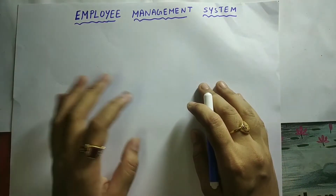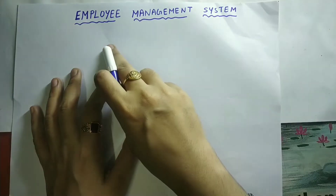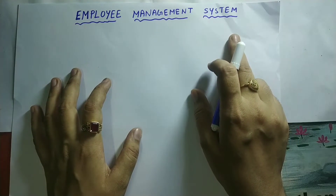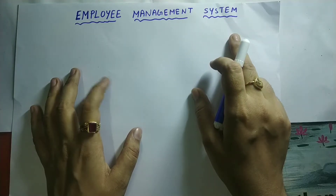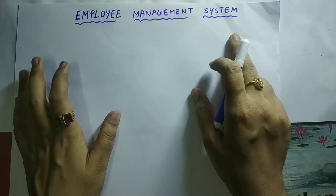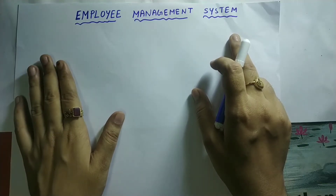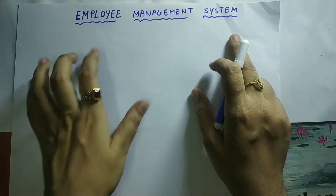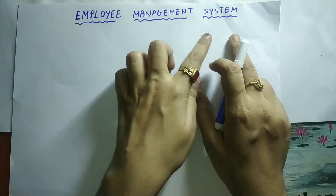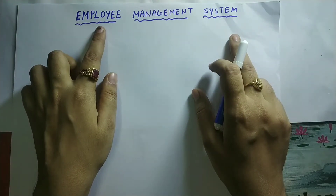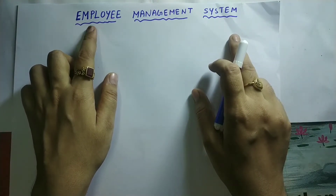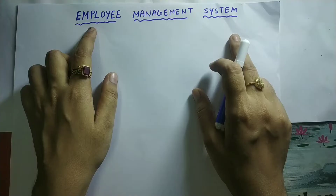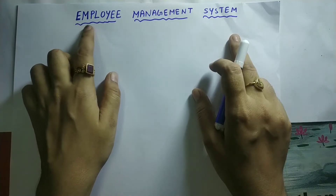In this video, let us learn to draw an ER diagram for the topic employee management system. What are all the entities? Before choosing the entities, you should know what an entity is. An entity is nothing but an object — an object which is conceptually existing or physically existing. In an employee management system, definitely an employee will be there. This employee is an entity because an employee is a person, so it is physically existing.